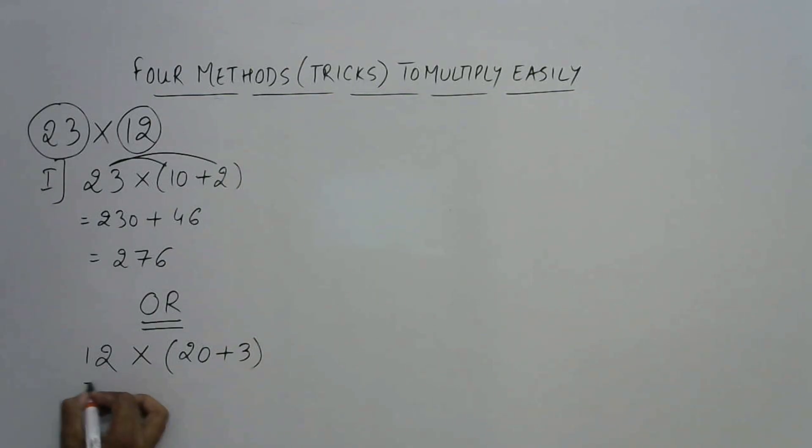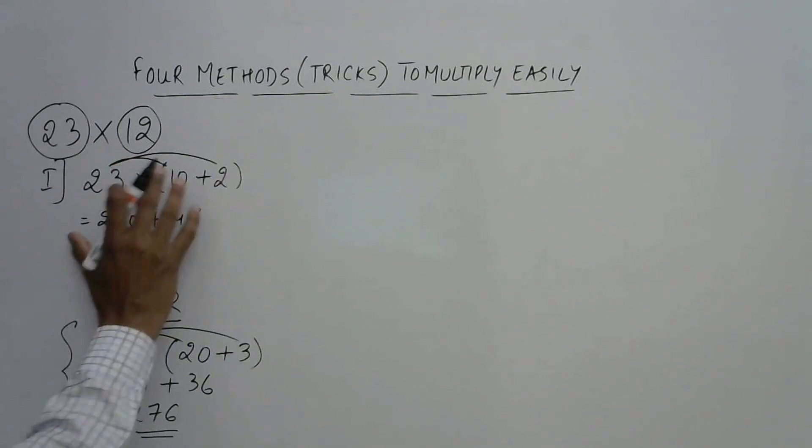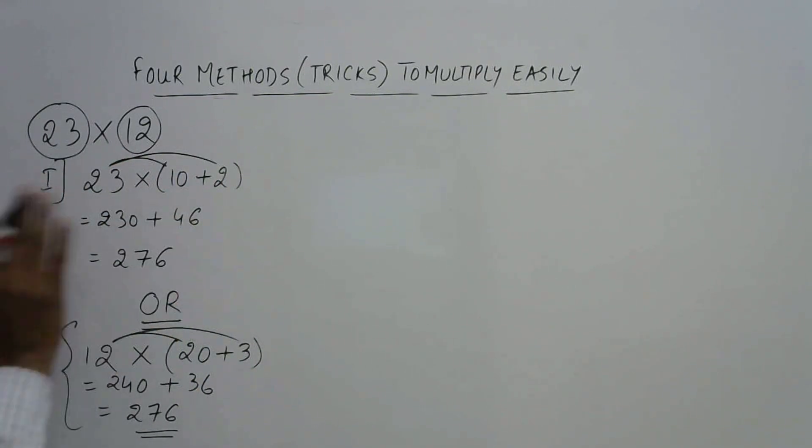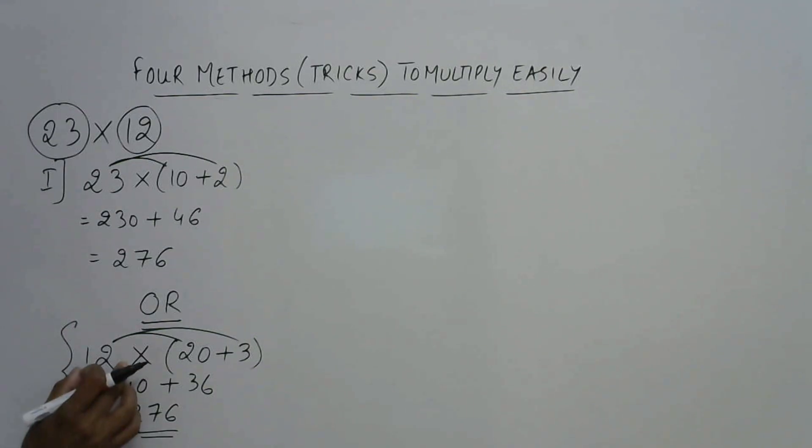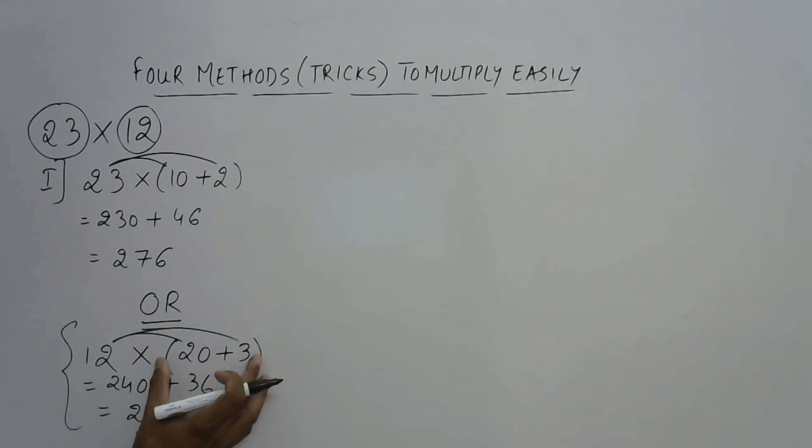So now you can multiply 12 by 2 that is 24 and put a 0 because 0 is here and 12 by 3 which is 36 thereby giving you the answer 276 again. This seems to be a little bit easier as compared to the previous one where you have to multiply by 23. So be careful in choosing which number to retain as it is and which number is to be broken in terms of the base quantity. Now, this is the distributive property which you can use to multiply numbers.